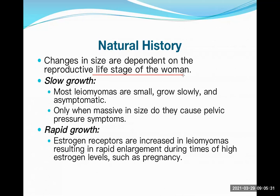Leiomyomas are very common in pregnancy because of increased estrogen levels. After menopause, even without treatment, the tumor will shrink in size because there is no more significant estrogen. Regarding growth patterns: most leiomyomas are small, grow slowly, and are asymptomatic. They only become problematic when they become massive, leading to pelvic pressure symptoms by compression of pelvic organs.